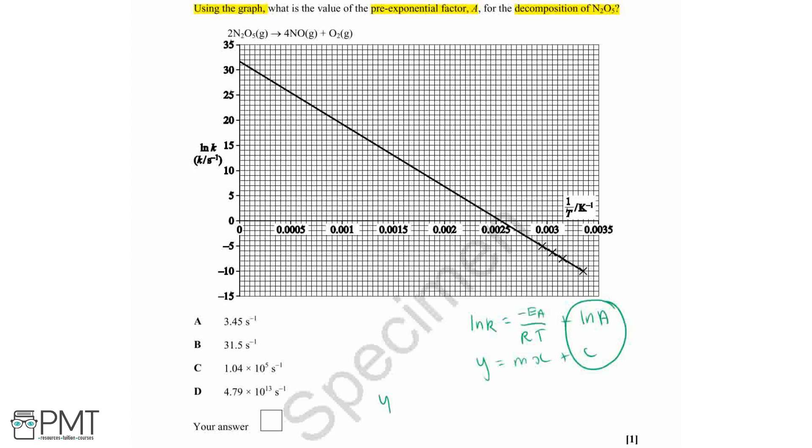So the y-intercept of this graph is at 31.5. So we can read this off from the graph and that's at 31.5. So that means that ln A is going to be 31.5, but we just need to work out what the value of A is.